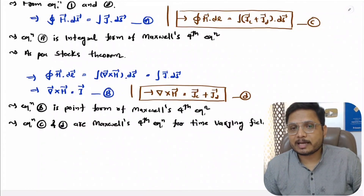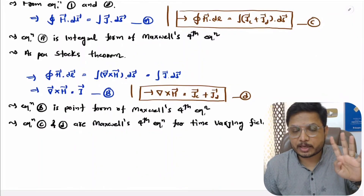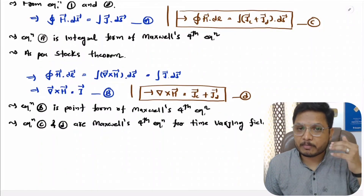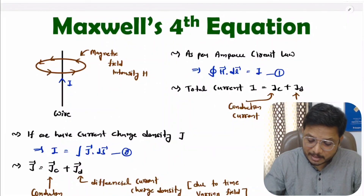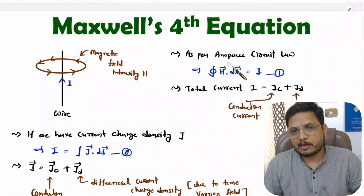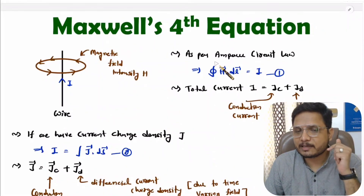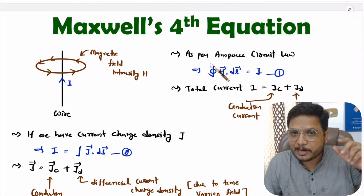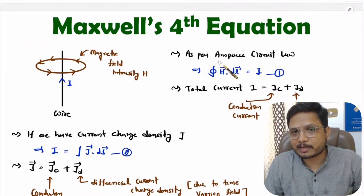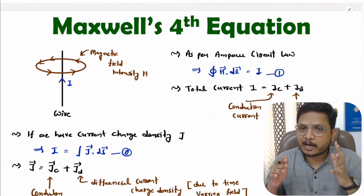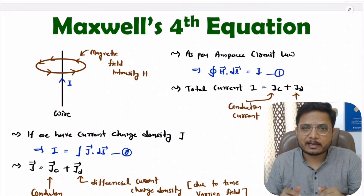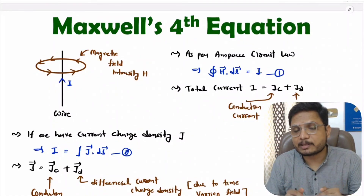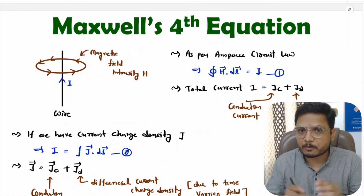This is how one can derive Maxwell's fourth equation in both differential form and integral form. Maxwell's fourth equation is based on Ampere's circuit law. If you want to understand Ampere's circuit law in detail, refer to my previous video in this Electromagnetic Theory lecture series. If you have any questions, post them in the comment section — I'll be happy to help. Thank you so much for watching.